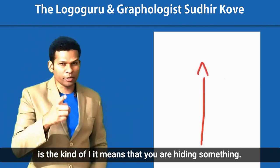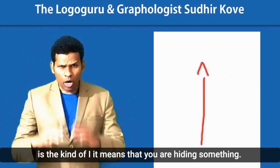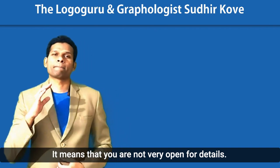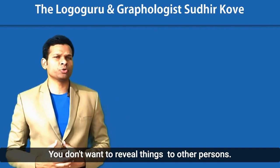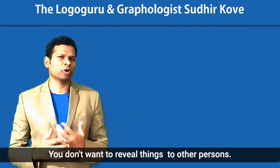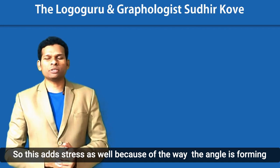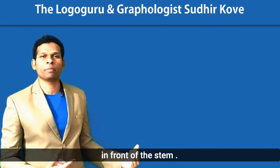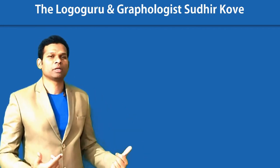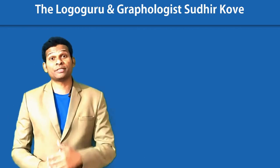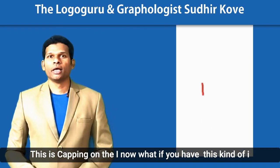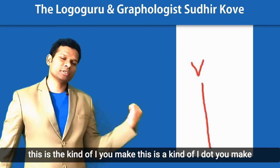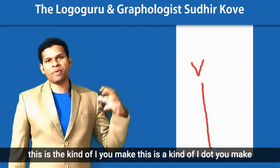If that is the kind of i-dot you make — like a cap — it means that you are hiding something. You are not very open about details, you don't want to reveal a lot of things to other people. This also adds stress, because the anger is forming — this is capping on the i.